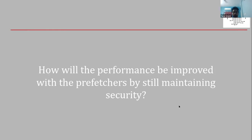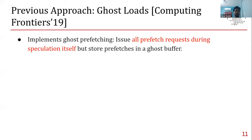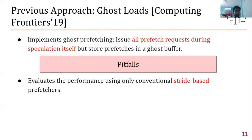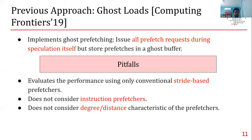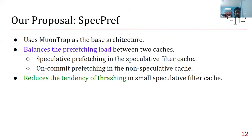A prior approach called Ghost Loads implements ghost prefetching — issuing prefetch requests during speculation but storing them in a small ghost buffer. However, Ghost Loads evaluates performance with only conventional stride-based prefetchers, does not consider instruction prefetchers or prefetch degree/distance characteristics, and uses only a small 8-entry ghost buffer for L1D prefetchers, inducing thrashing with aggressive prefetchers like IPCP.